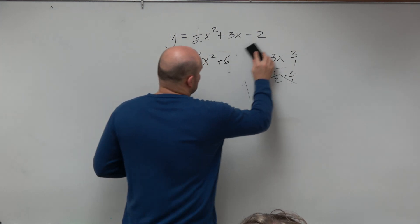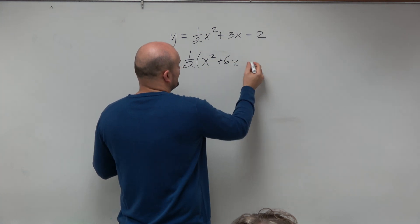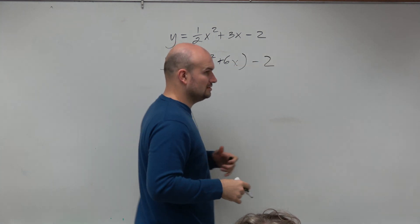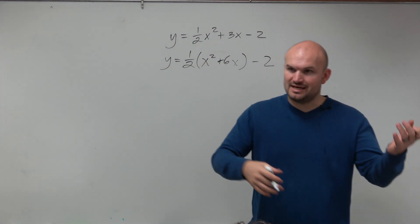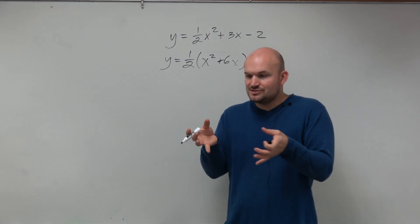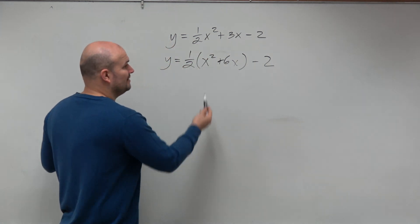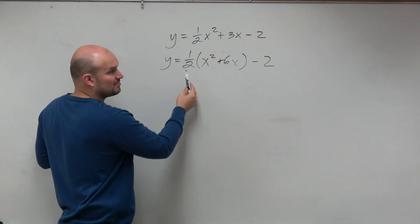Now you could factor the 1 half out of everything, but in my opinion, that just makes everything more confusing. And again, our goal of this is not to solve where we have to do something to everything. Our goal here is to create a perfect square trinomial.